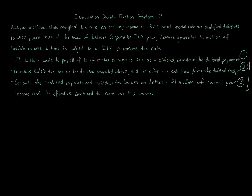A few things: Kale is an individual subject to an ordinary income tax rate of 37% and a special dividend rate of 20% — that's going to be really important. Kale owns all the stock of Lettuce. This year, Lettuce generates a million dollars of taxable income at a 21% tax rate. So the first question: if Lettuce wants to pay all of its after-tax earnings to Kale as a dividend, calculate the dividend payment.